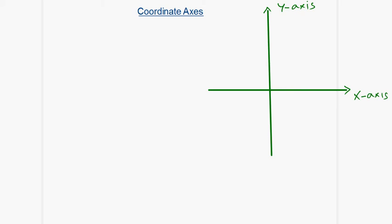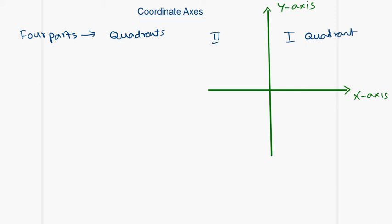Each one of the parts is called a quadrant. There is the first quadrant, the second quadrant, the third quadrant, and the fourth quadrant.